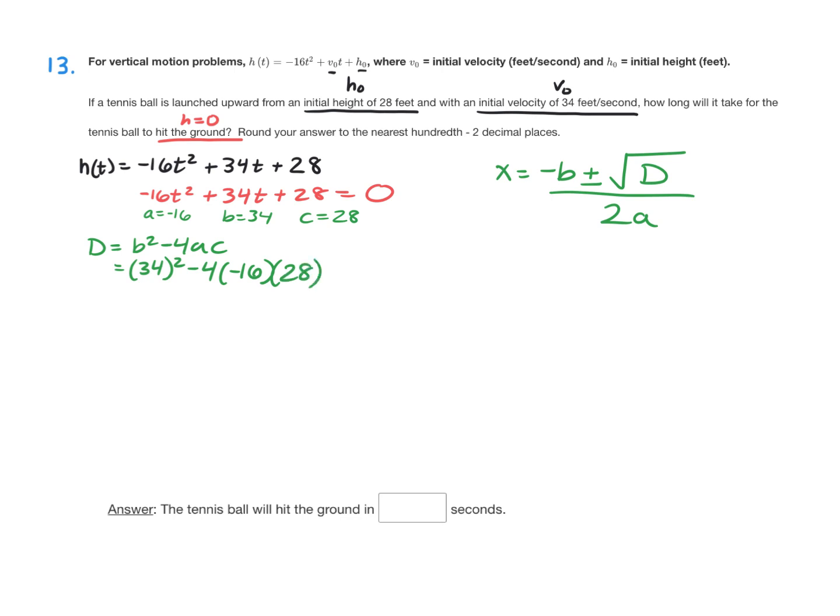And these numbers are going to get pretty big, so I would recommend that you just type that into your calculator. And when I type that into my calculator, I got 2,948. So that's my discriminant.